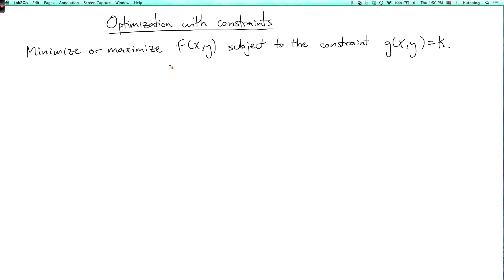So now we have two functions here. f is the function which we want to make as big or as small as possible. And the function g is a restriction. We're not allowed to consider arbitrary x and y. We're required to consider x and y only on the level set of g, usually a curve, where g is equal to k.